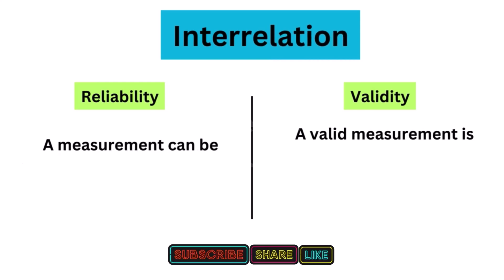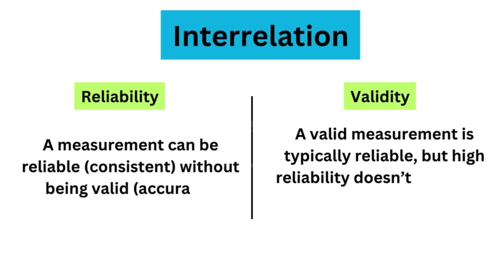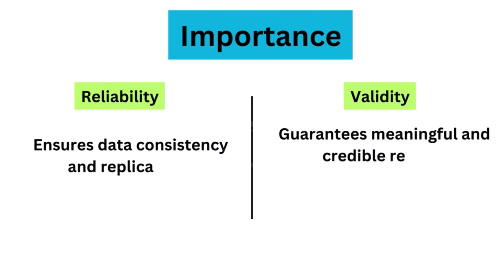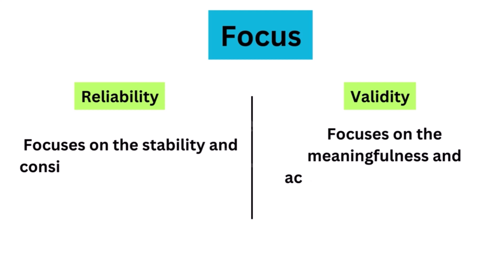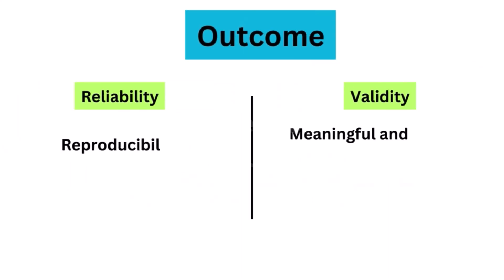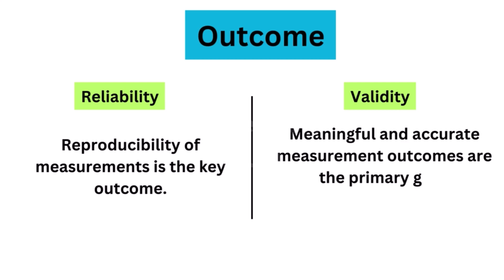Fourth, interrelation: a measurement can be reliable — consistent — without being valid or accurate. However, a valid measurement is typically reliable, but high reliability doesn't guarantee validity. Fifth, importance: reliability ensures data consistency and replicability, while validity guarantees meaningful and credible results. Sixth, focus: reliability focuses on the stability and consistency of measurement outcomes, while validity focuses on the meaningfulness and accuracy of measurement outcomes. Seventh, outcome: the reproducibility of measurements is the key outcome of reliability.